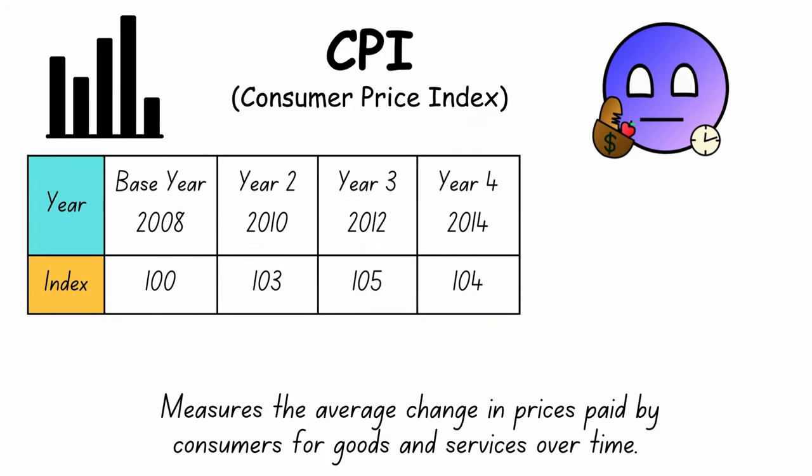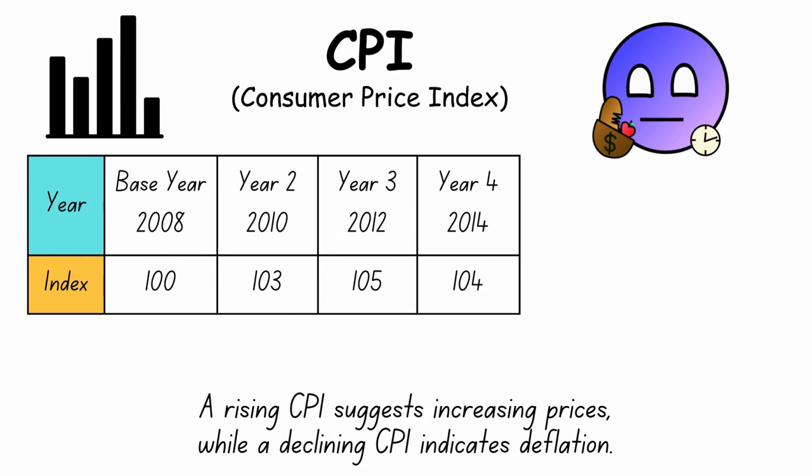CPI, or Consumer Price Index, measures the average change in prices paid by consumers for goods and services over time. A rising CPI suggests increasing prices, while a declining CPI indicates deflation. CPI is equal to the current year market basket value, divided by the base year market basket value, times 100.